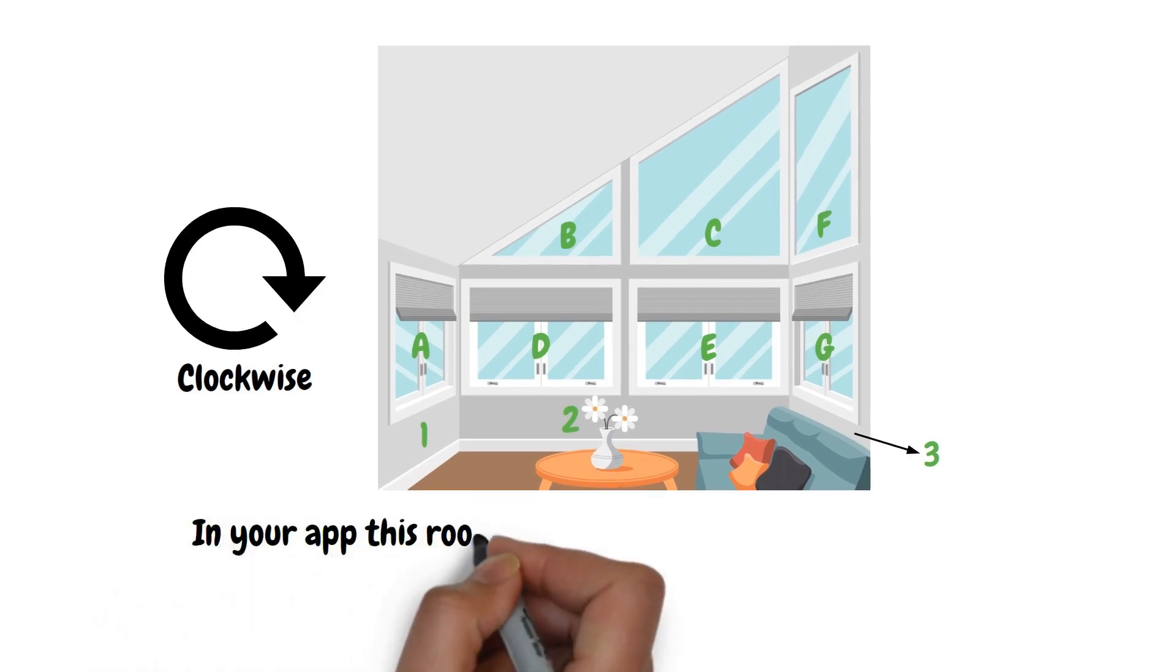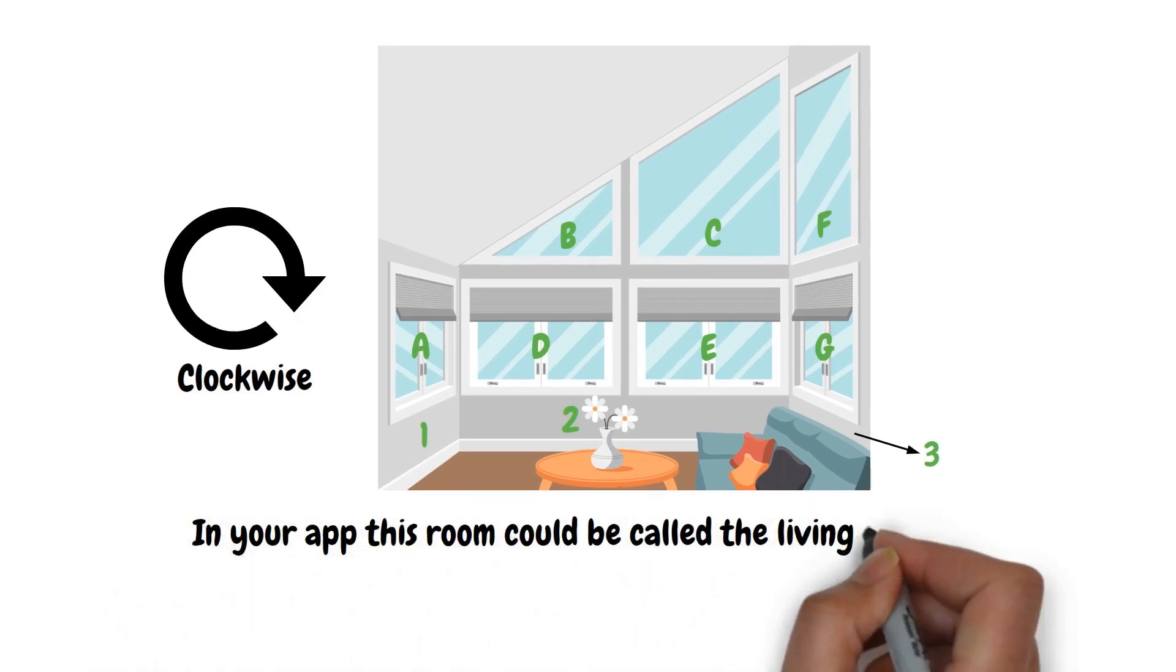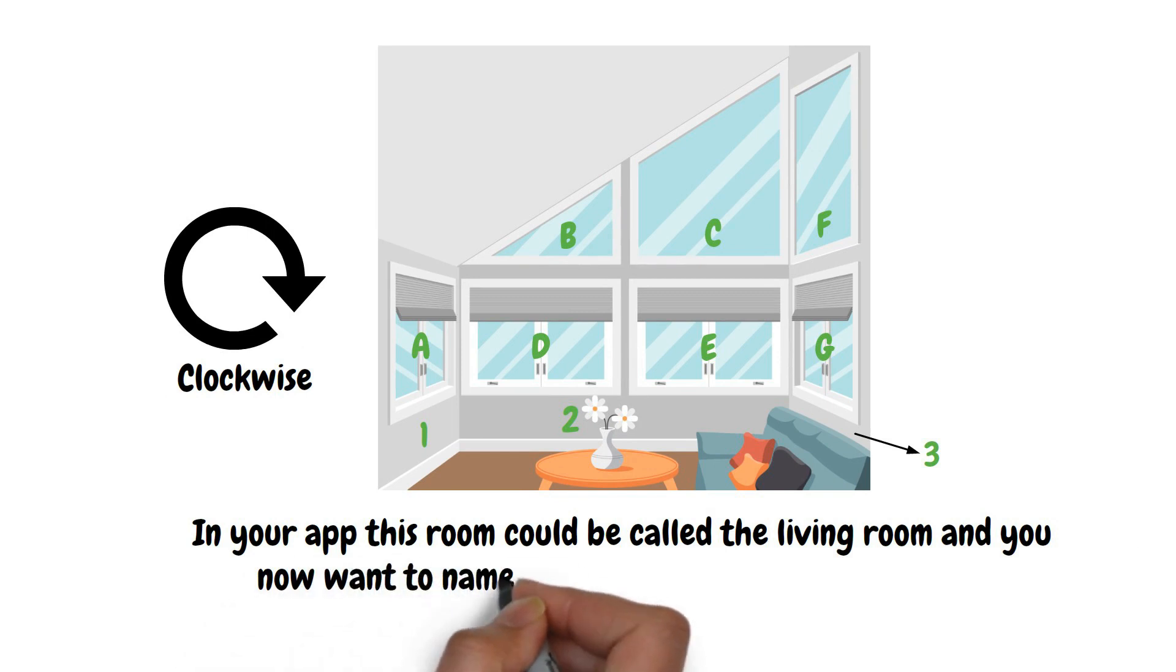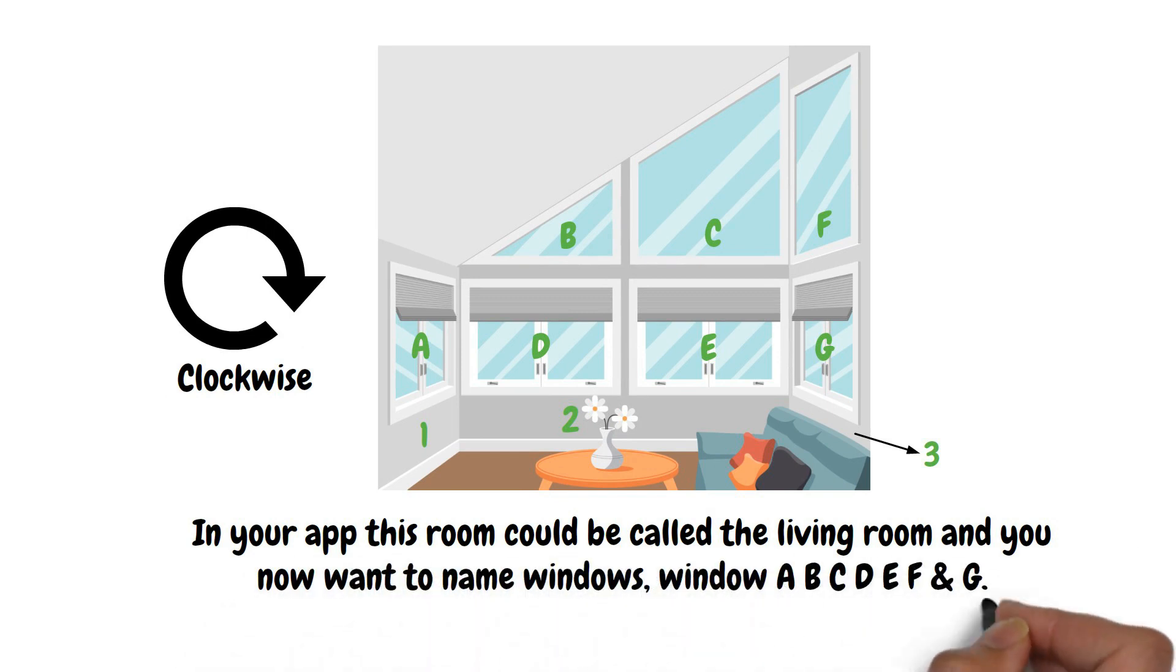In your app, this room could be called the living room, and you now want to name windows. Windows A, B, C, D, E, F, and G.